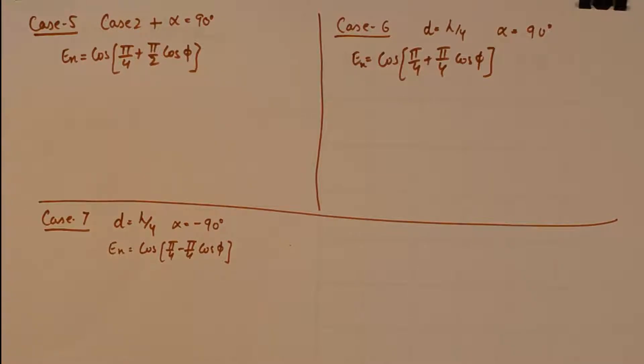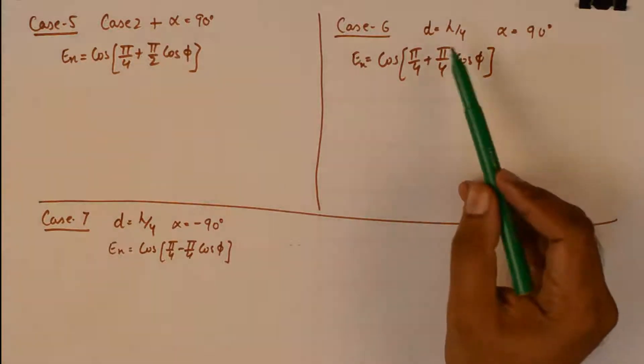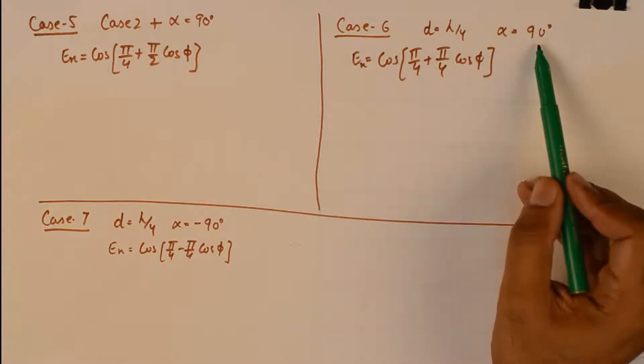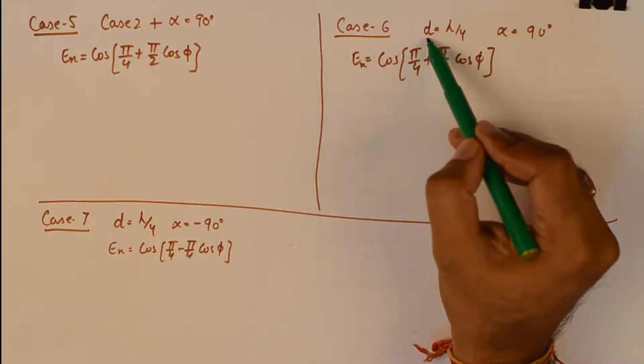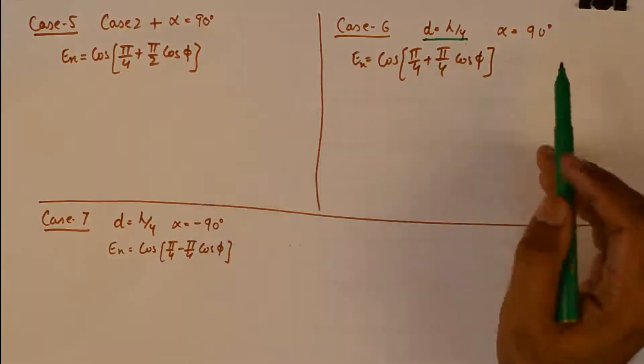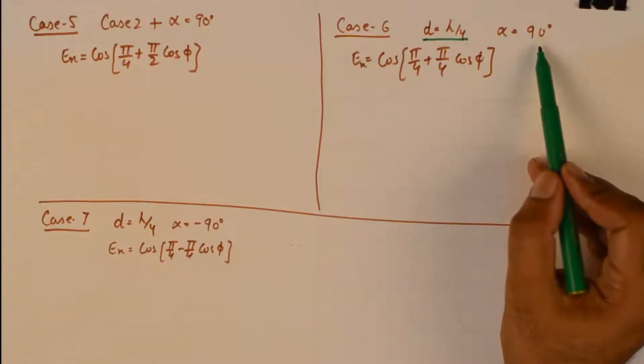Okay, we now take three more special cases in end fire configurations. Now how do I mention these configurations? As you can see in case 5, I have written down case 2 plus a change, and that change is alpha is now 90 degrees instead of 180 degrees. And how would that change the normalized field or the array factor? The normalized field changed from sine pi by 2 cos phi to cos of pi by 4 plus pi by 2 cos phi. And alpha is reduced from 180 degrees to 90 degrees. And how is that affecting the array factor?